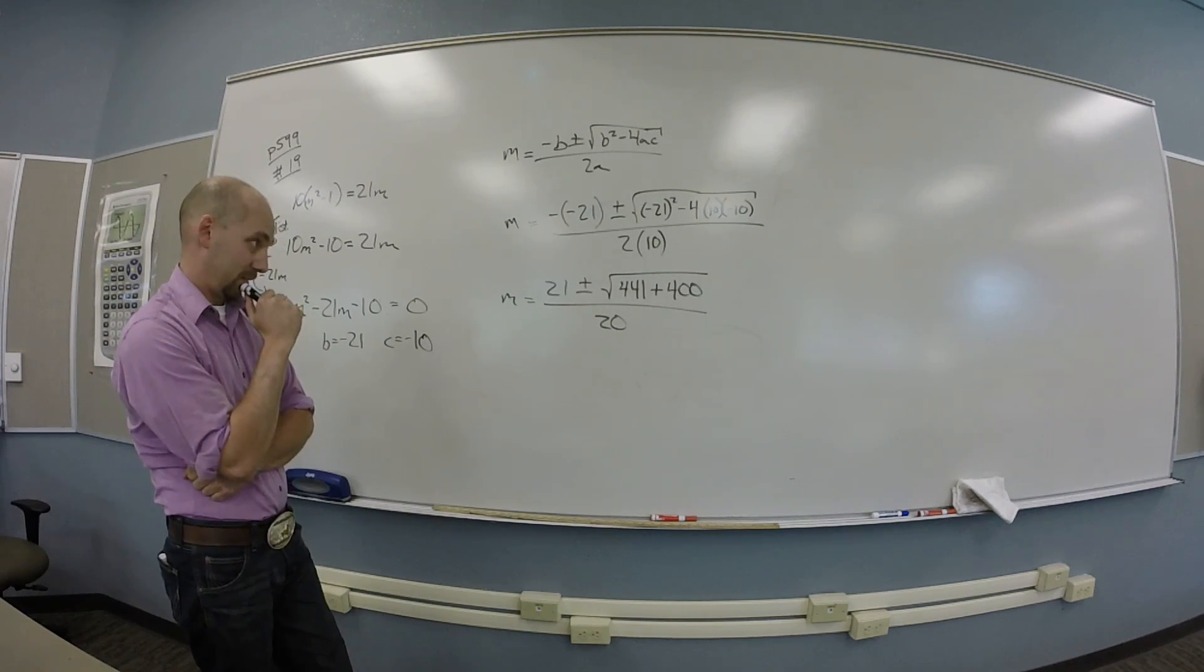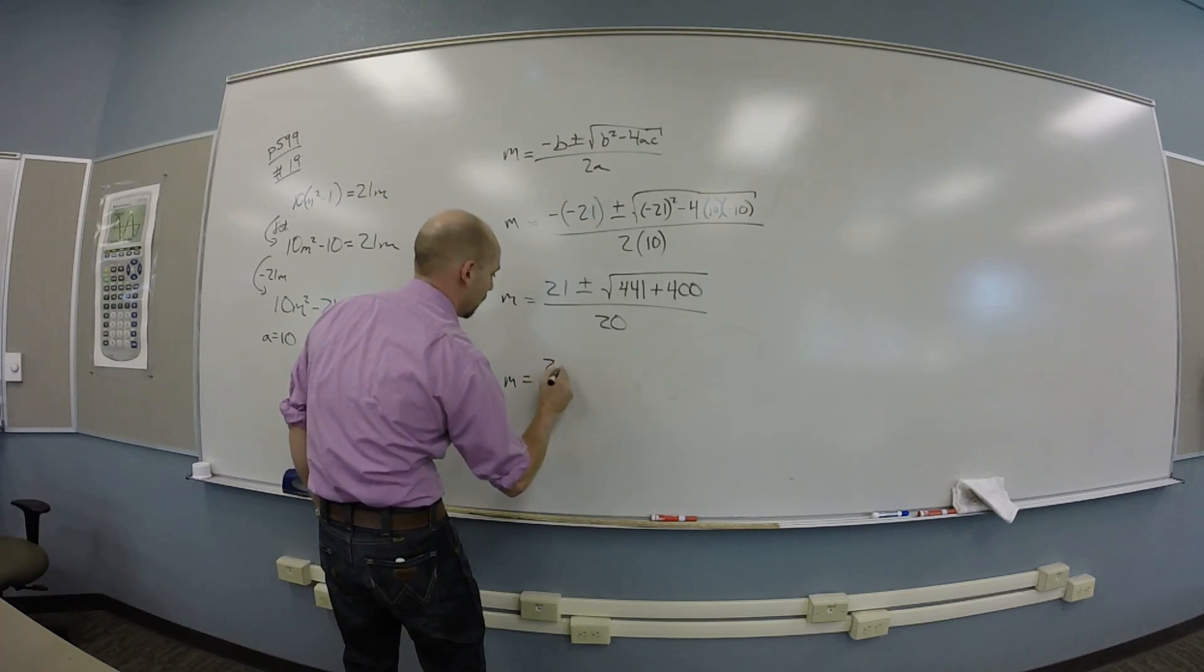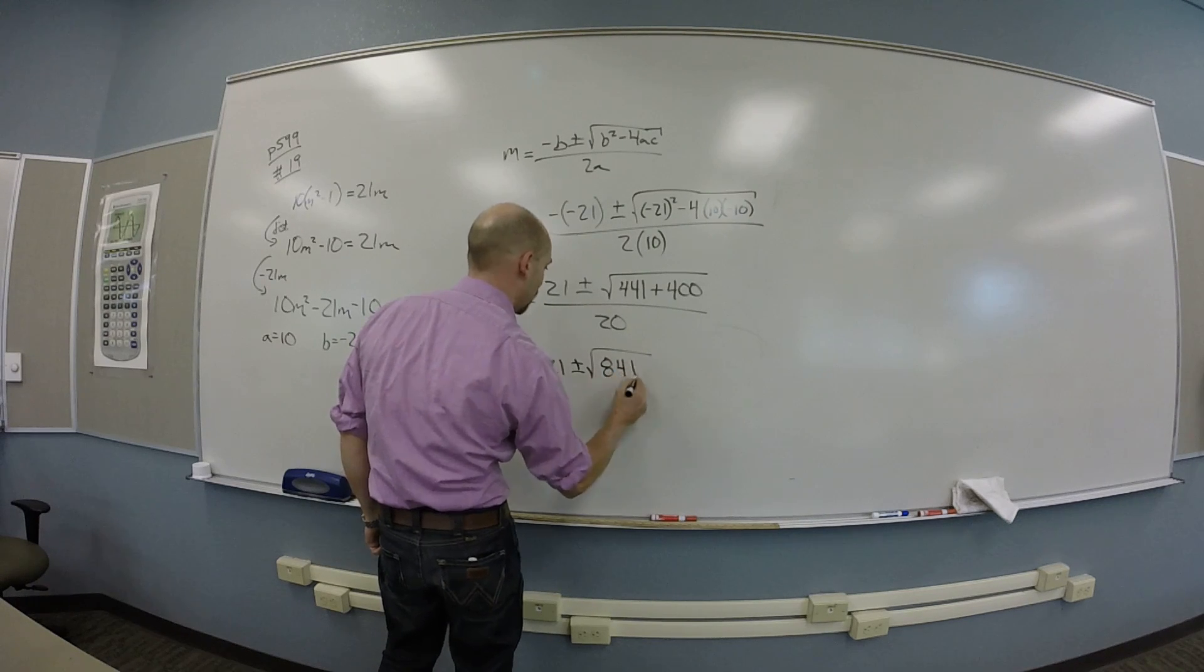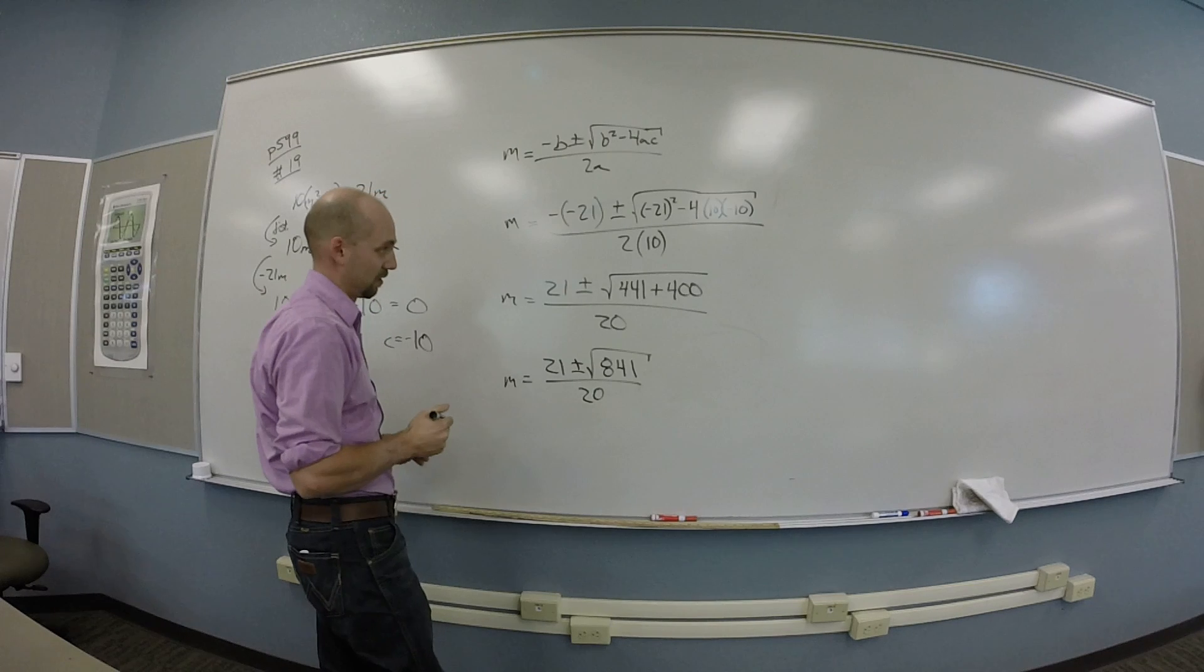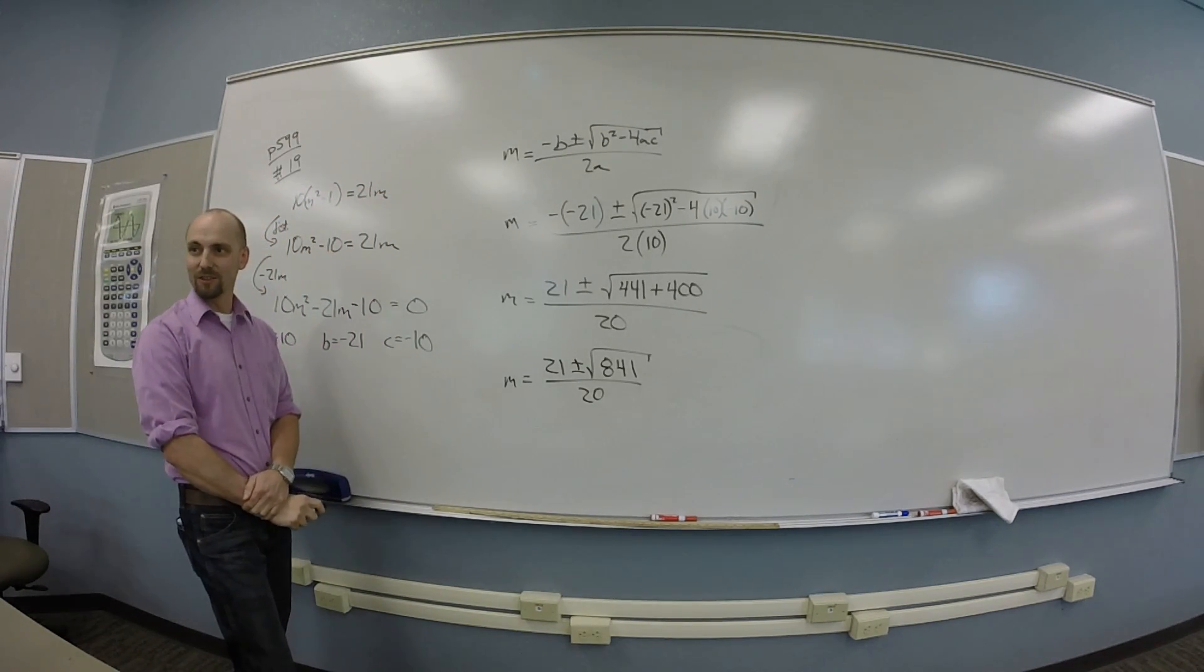Now what? And you just add 441 to 400 and square root it. Okay. So m is 21 plus or minus the square root of 841 over 20. What's the square root of 841?